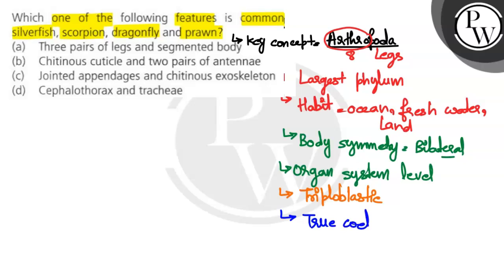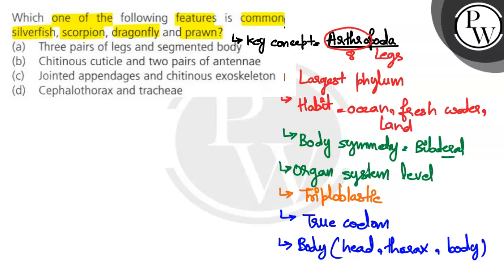In Arthropoda, the body is divided into three parts: the head, the thorax, and the abdomen. The entire body has a covering called an exoskeleton, and this exoskeleton is made of chitin, which is a very hard polysaccharide.